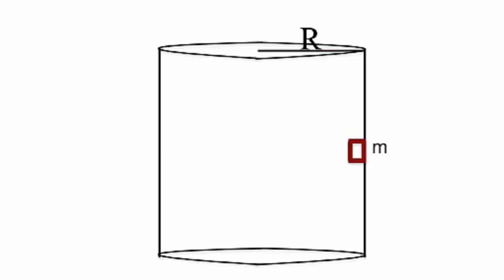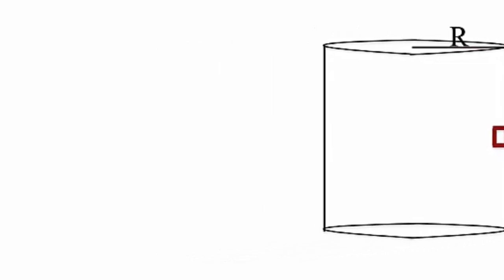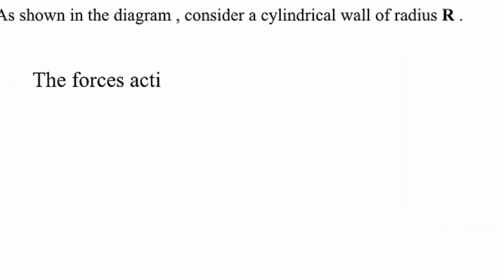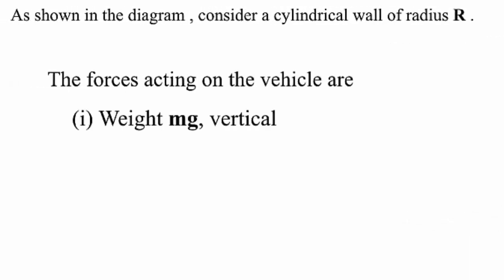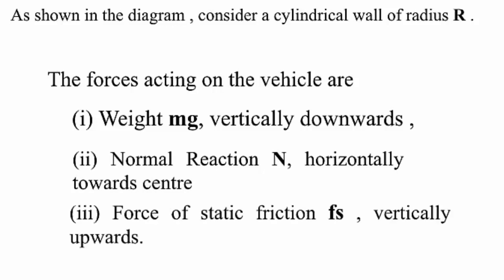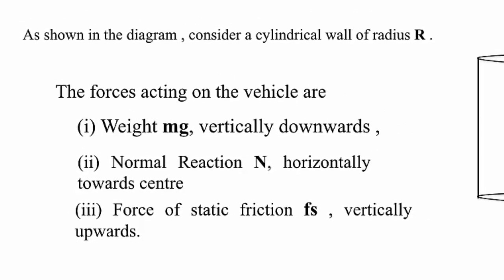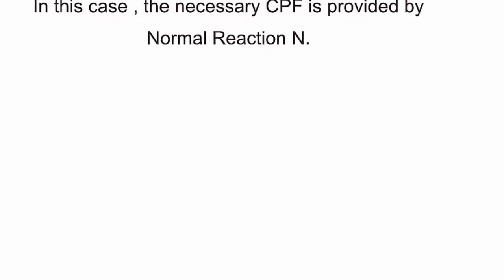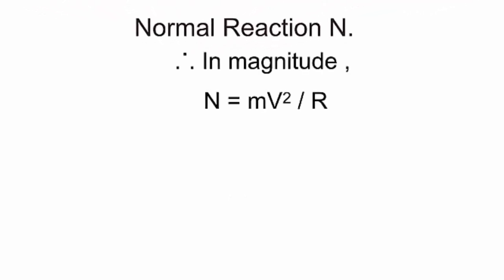In our second application, we will study the simple physics behind this stunt. M is the mass of the vehicle along with the stuntman. The three different forces acting on the vehicle in this case are its weight mg in the vertically downward direction, normal reaction horizontally towards the center, and frictional force which is vertically upward. The necessary centripetal force is provided by the normal reaction.